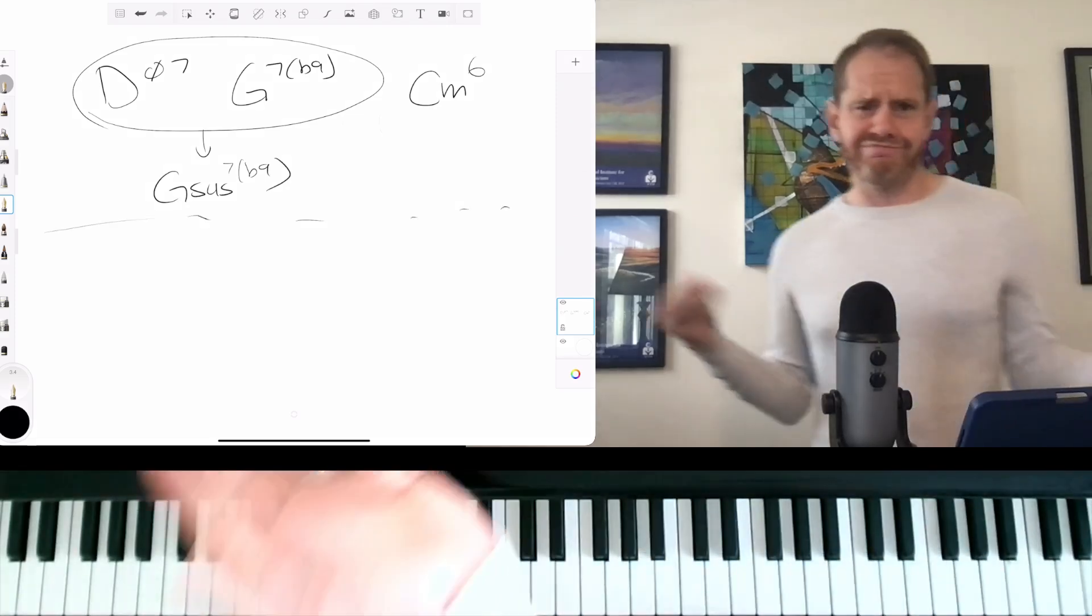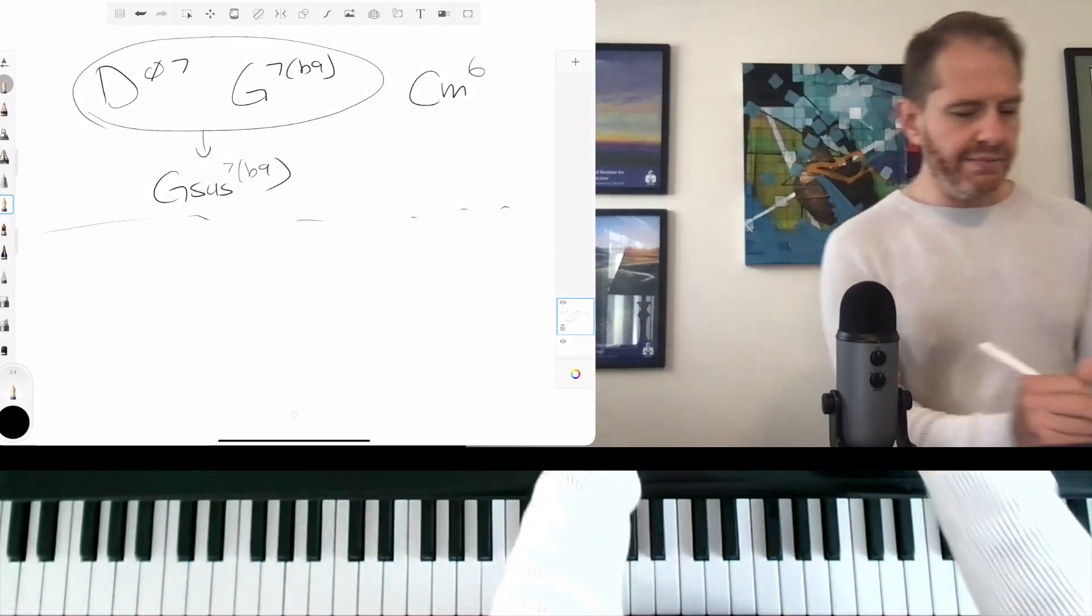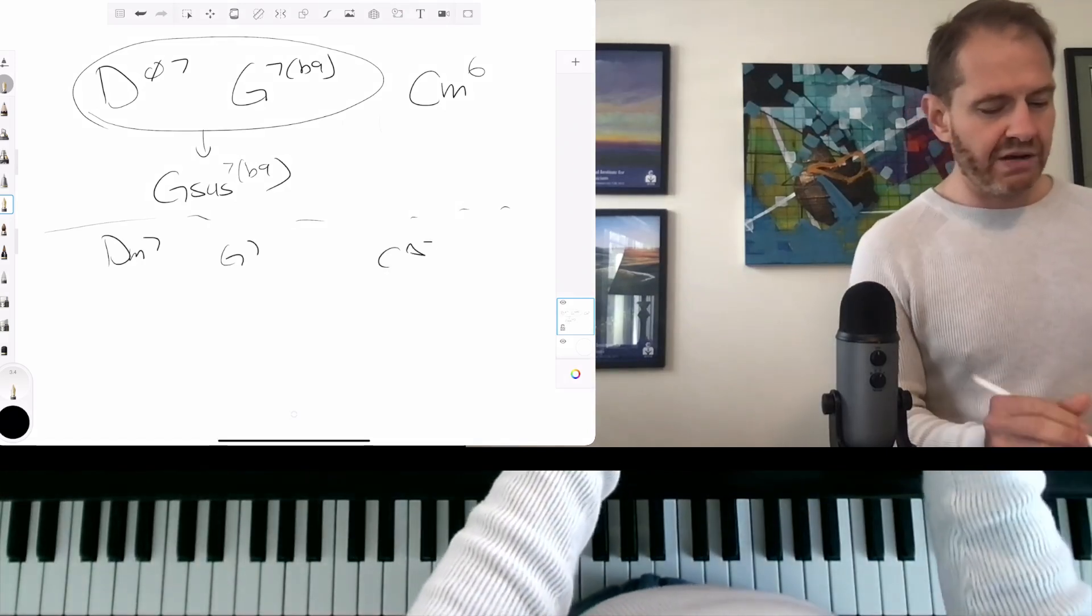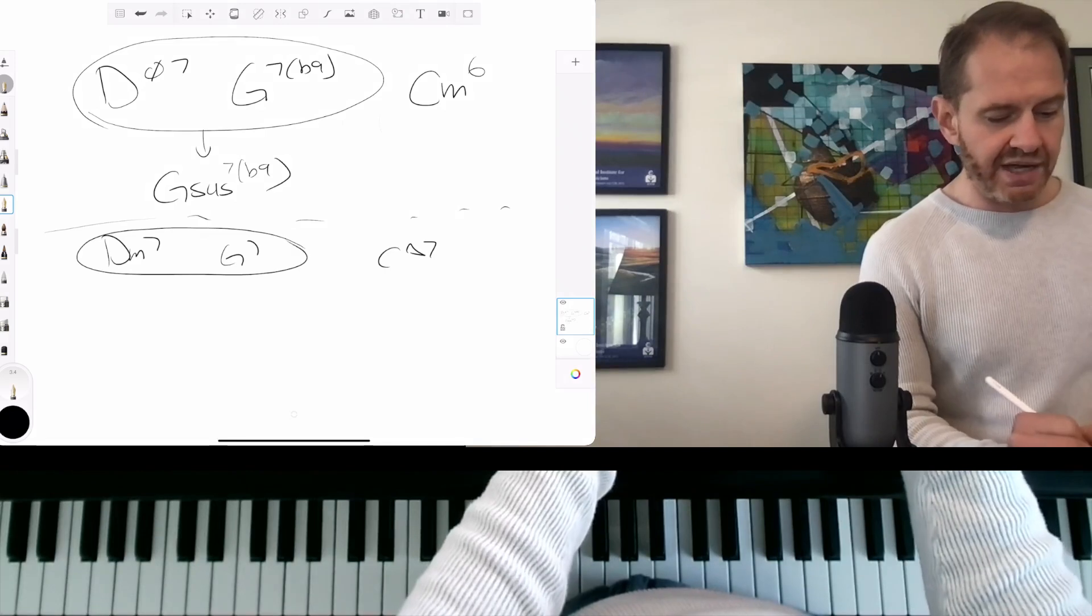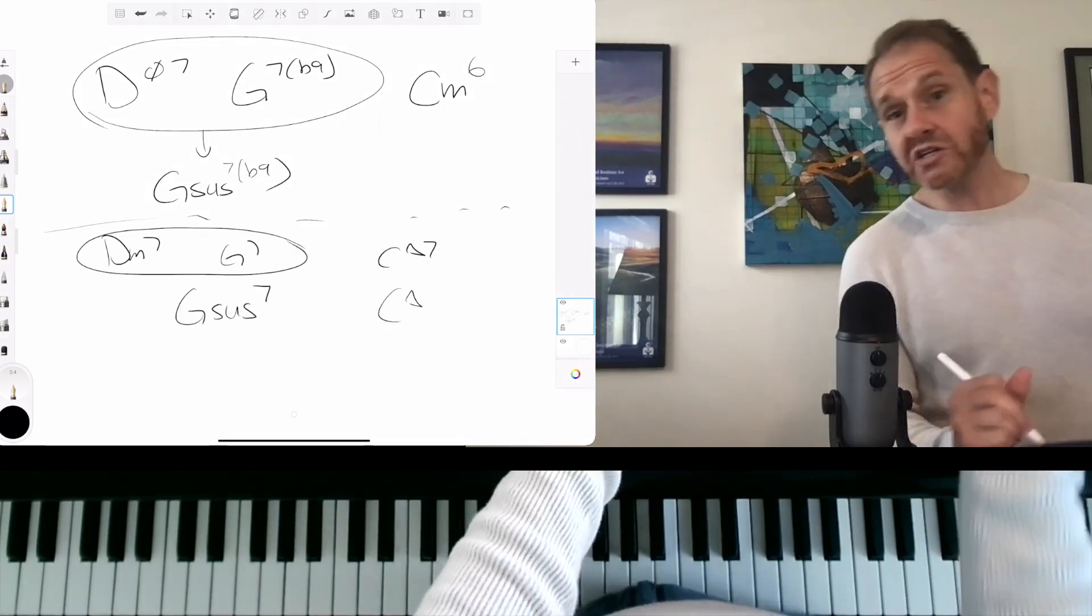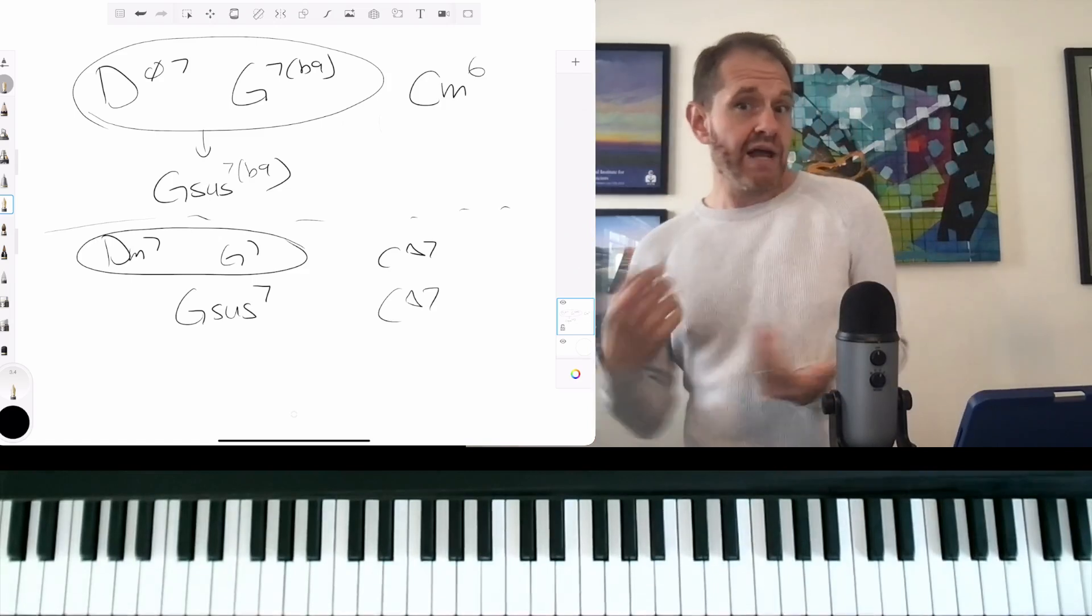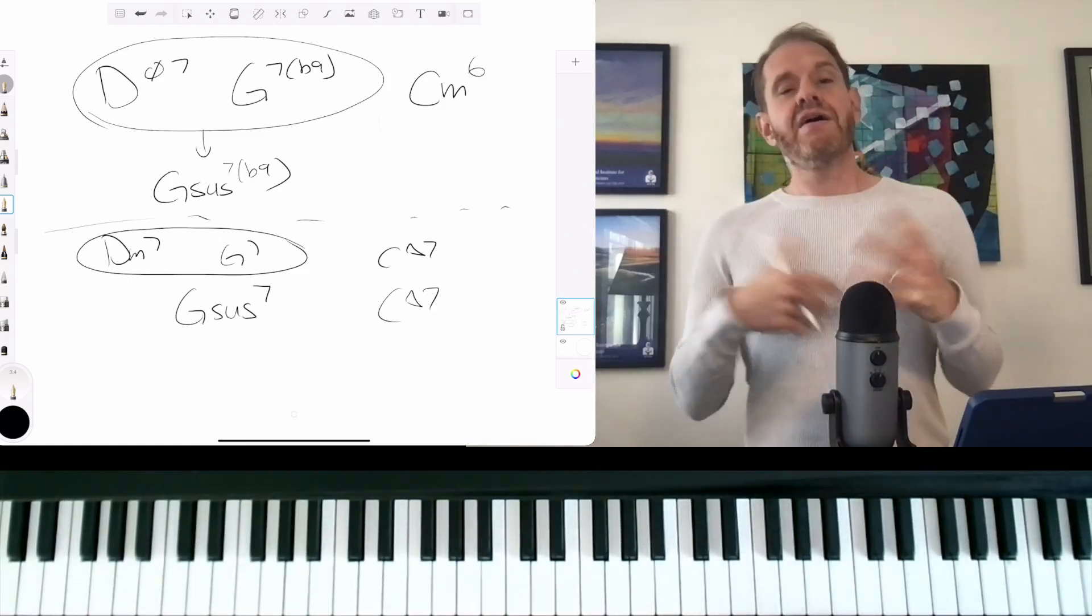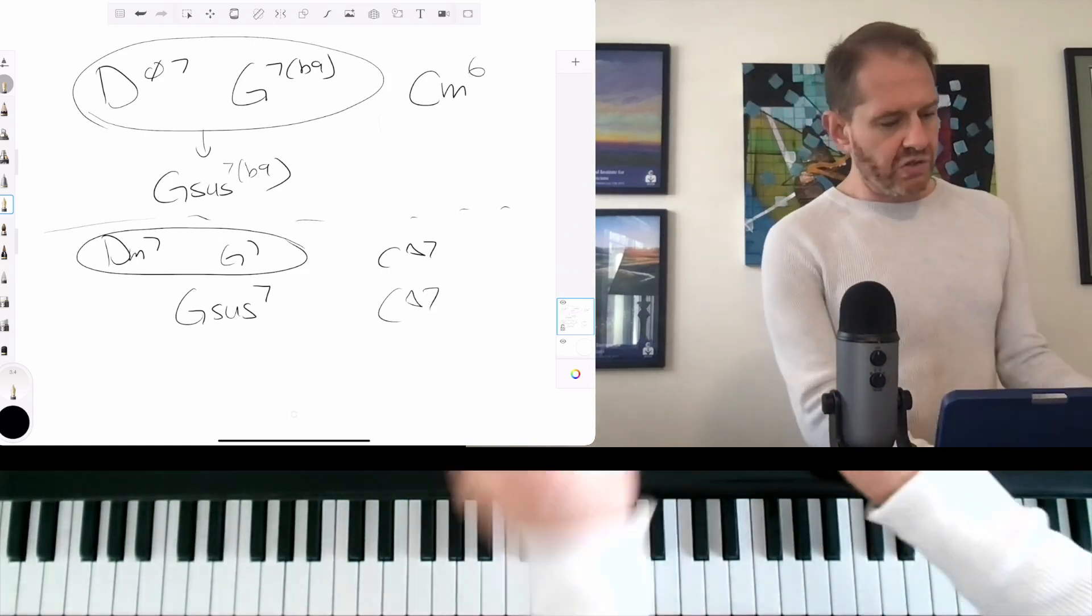And actually, this isn't that weird. You might think, what the hell? What are you doing? But I believe that in a major two, five, one, if we want to make this sound more modal, we're going to lasso these guys, we're going to make it a G sus seven natural nine. But in a minor key, we're going to have that flat nine. So it's actually not that crazy that we're going to have a G sus seven flat nine.